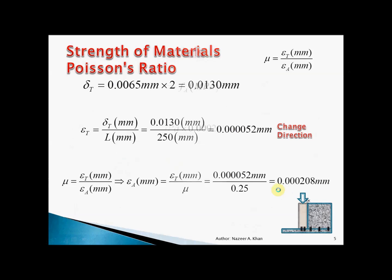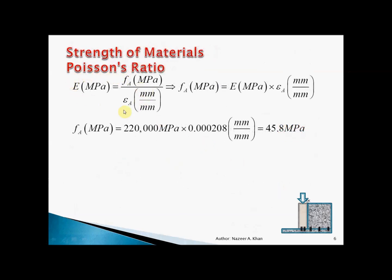Using the modulus of elasticity formula — which is the slope of the stress-strain curve — we rearrange to solve for stress: stress equals modulus of elasticity times actual strain. We've been given E = 220,000 MPa and we just calculated the actual strain, so plugging in the numbers gives us a stress of approximately 45.8 MPa in the actual direction.